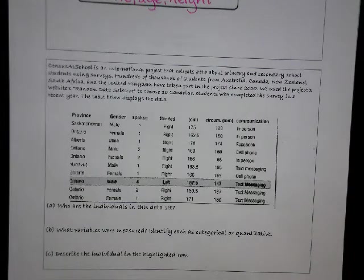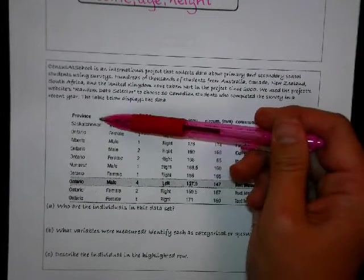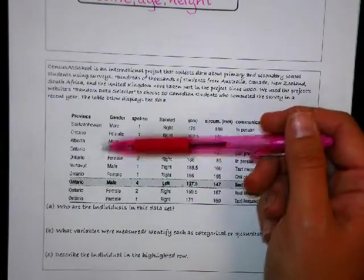Census at school is an international project that collects data about primary and secondary school students using surveys. Hundreds of thousands of students from Australia, Canada, New Zealand, South Africa, and the United Kingdom have taken part in the project since 2000. We use the project's website's random data selector to choose ten Canadian students who completed this survey in a recent year. The table below displays the data.